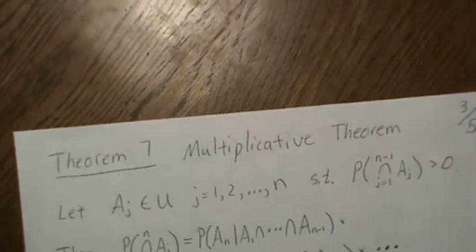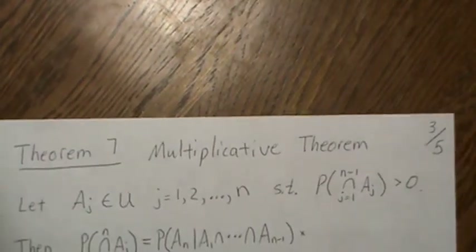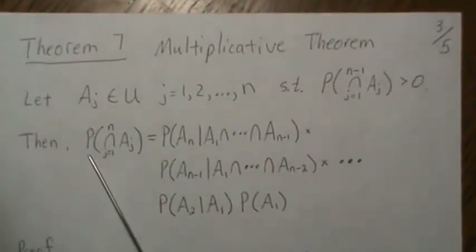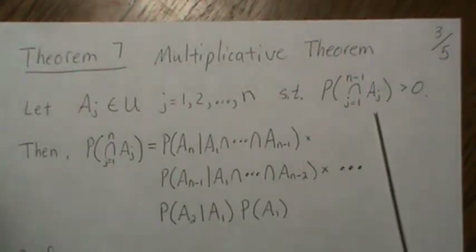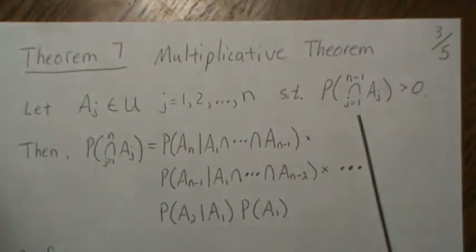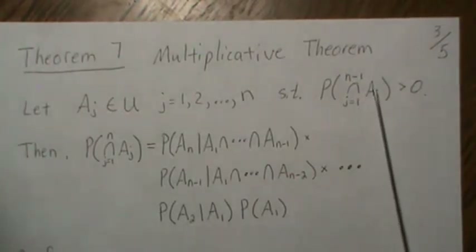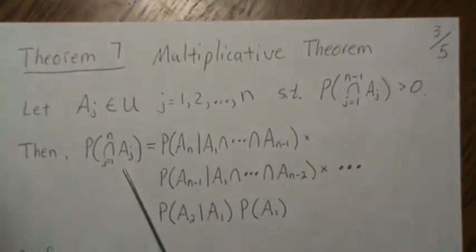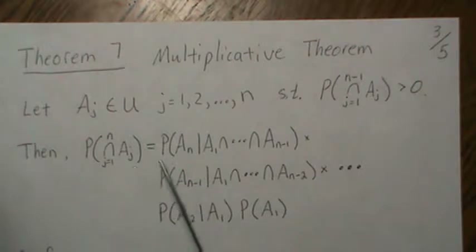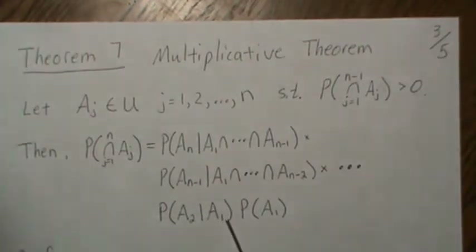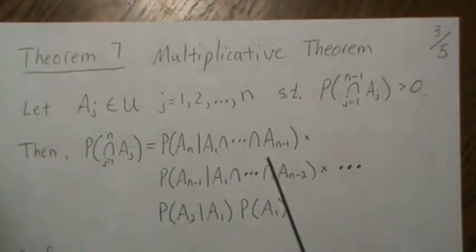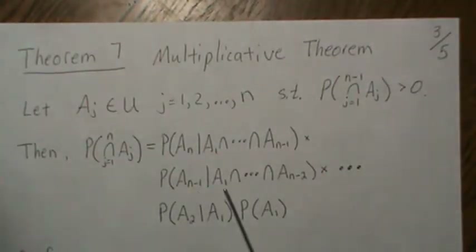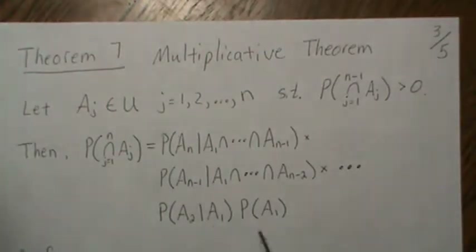Now let's look at the multiplicative theorem. It says that if we have events A_j in our sigma field such that the probability of their union from one to N minus one is positive, then the finite intersection A_1 through A_N can be written as a product of conditional probabilities: P(A_N | A_1 ∩ ... ∩ A_{N-1}) times P(A_{N-1} | A_1 ∩ ... ∩ A_{N-2}), and so on, all the way down to P(A_1).